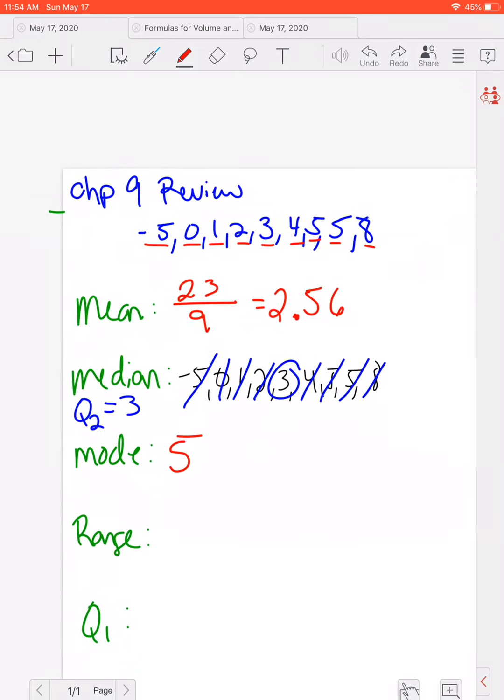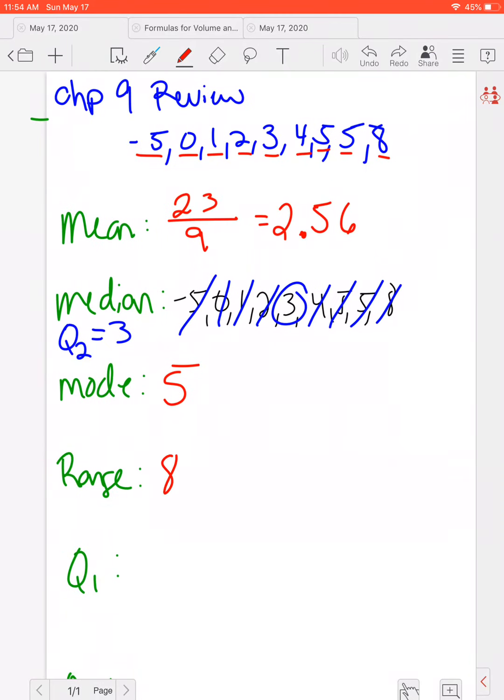Range, remember, is largest minus the smallest, so we're going to have 8 minus negative 5. Now be careful here because we do have a negative number, so we're subtracting a negative, which means we're actually adding. So this is the same as 8 plus 5, which would be 13. And so there's 13 numbers between negative 5 and a positive 8.